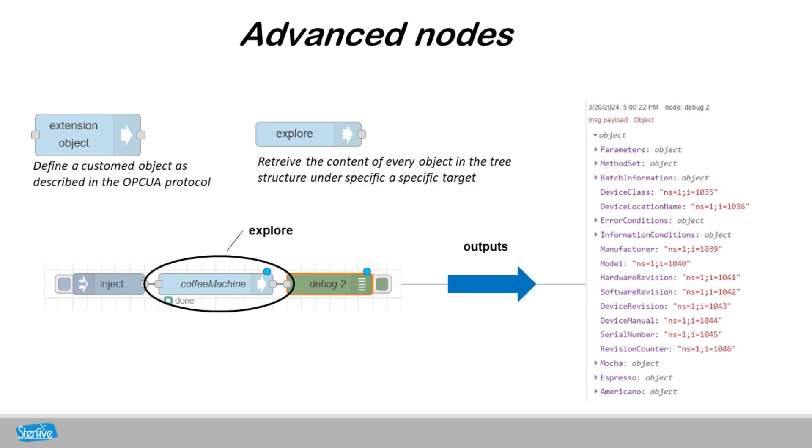For more advanced users, with the extension node, you have the possibility to create a custom object, as described in the OPC UA protocol. It's a fundamental feature for developing your own structures. The explore node allows us to get all the information contained under a specific target on the server.